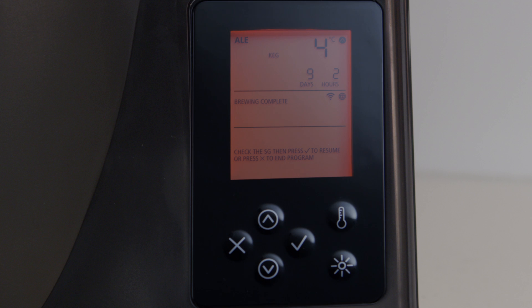Should EOF not be detected by the Beerdroid, this is one case where you will need to manually check the specific gravity of your brew. This is the density of the brew with respect to water.